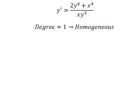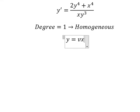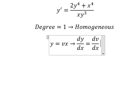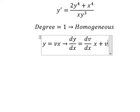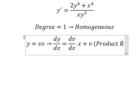So I will put y equals to vx. Later we differentiate both sides. This one we have dv over dx multiplied by x, plus we have v. And that is the product rule of differentiation.